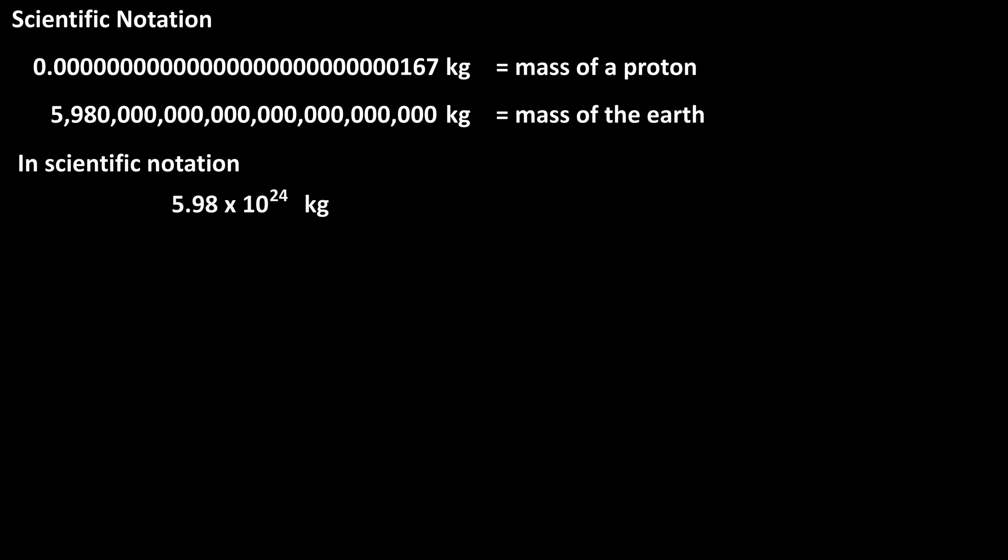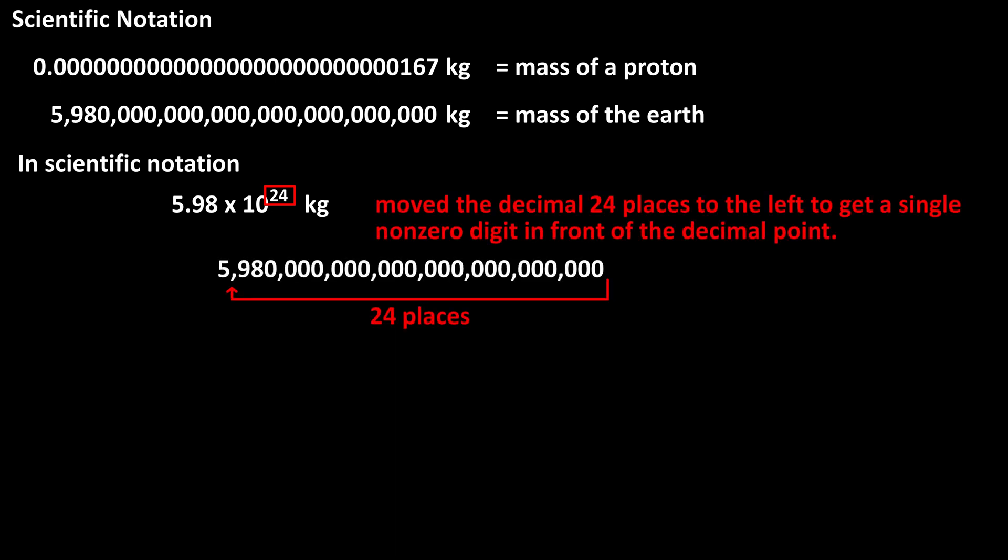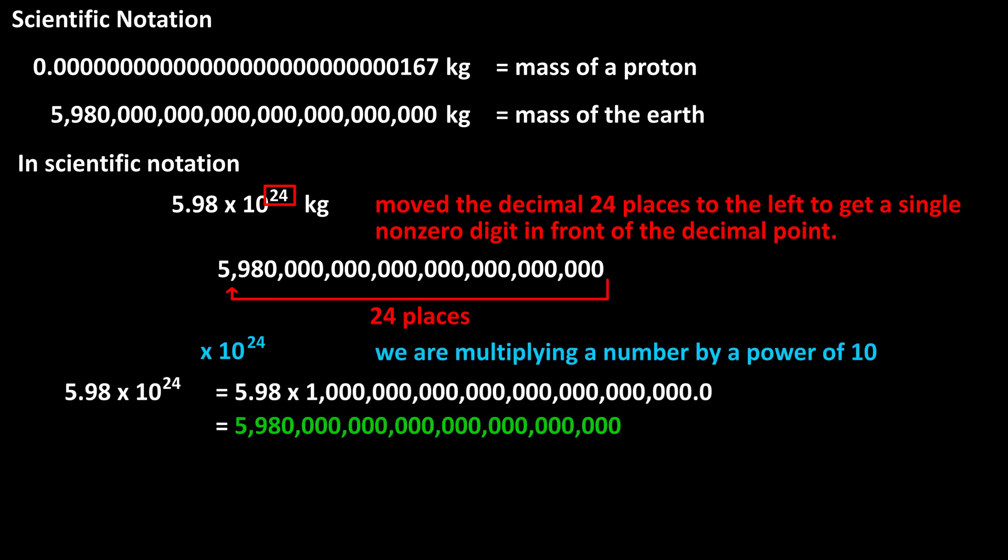In scientific notation, the mass of the earth is written as 5.98 times 10 to the 24 kilograms. Again, the key number is the exponent of positive 24. What this means is that we had to move the decimal point 24 places to the left to get a single non-zero digit in the ones column, or in front of the decimal point. And here is the actual math of the expression written out, and again, we get the original number for the mass of the earth.